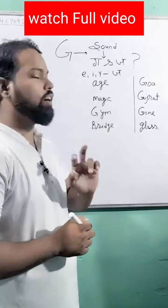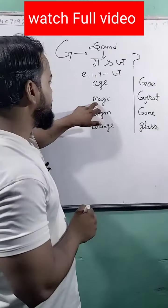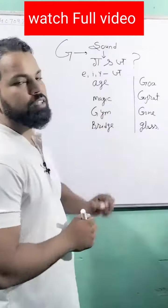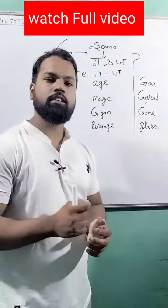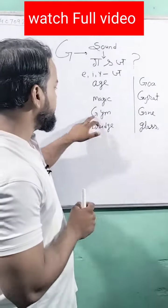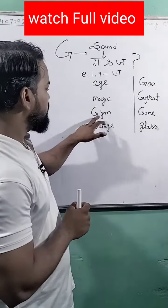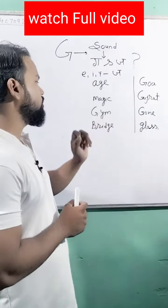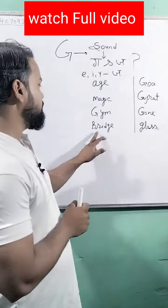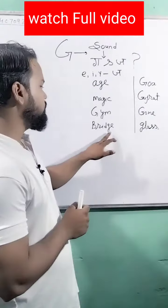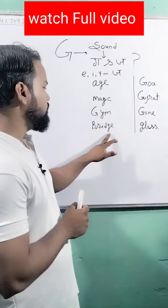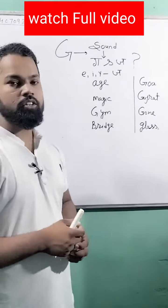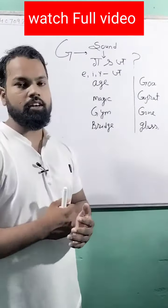Like 'age' — ja. And 'magic' — after G, I comes, so we call it 'ja', magic. And Y — when Y comes after G, so it's called 'j', like 'gym'. And 'bridge' — E comes after G, so it's called 'ja'.